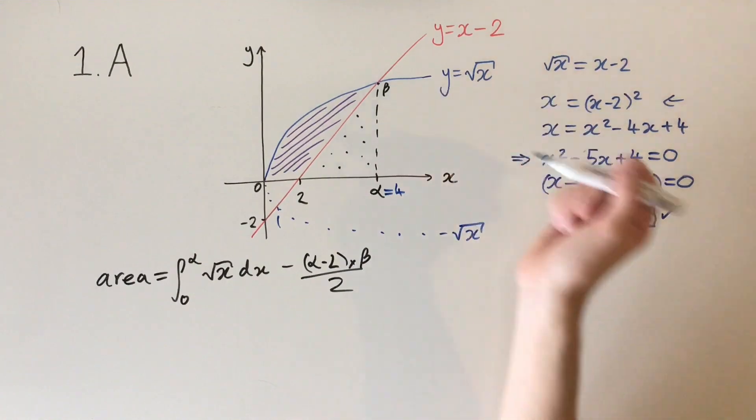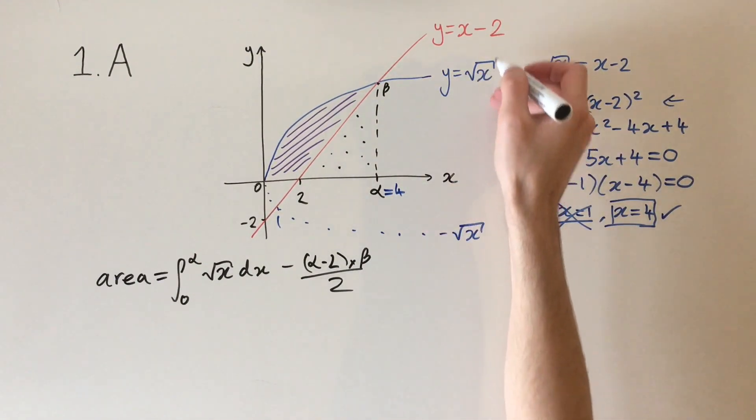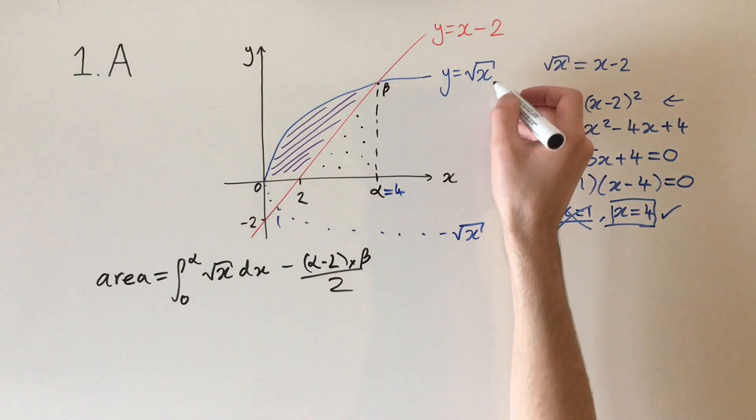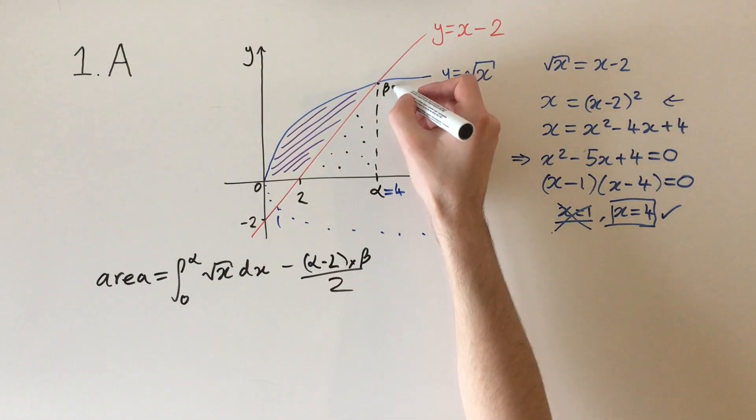We found alpha equals 4, and then we need to find beta as well, which is the height. If we put alpha equals 4 into either of these equations, it's going to be the same: square root of 4 equals 4 minus 2, which is just 2. So beta equals 2.